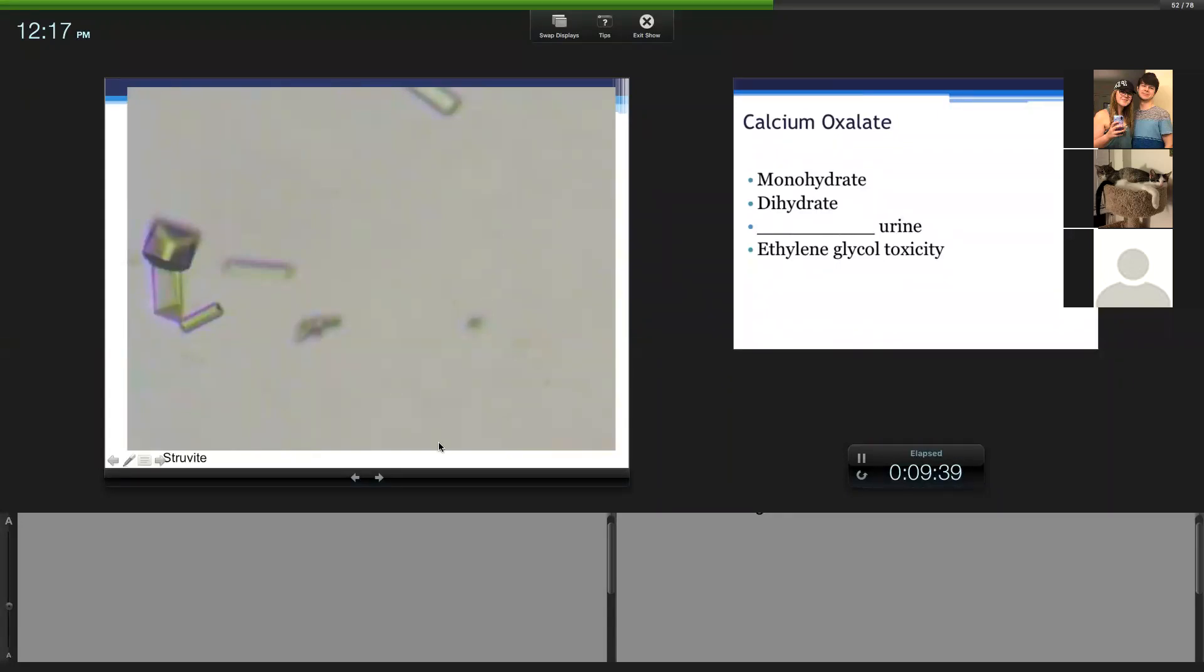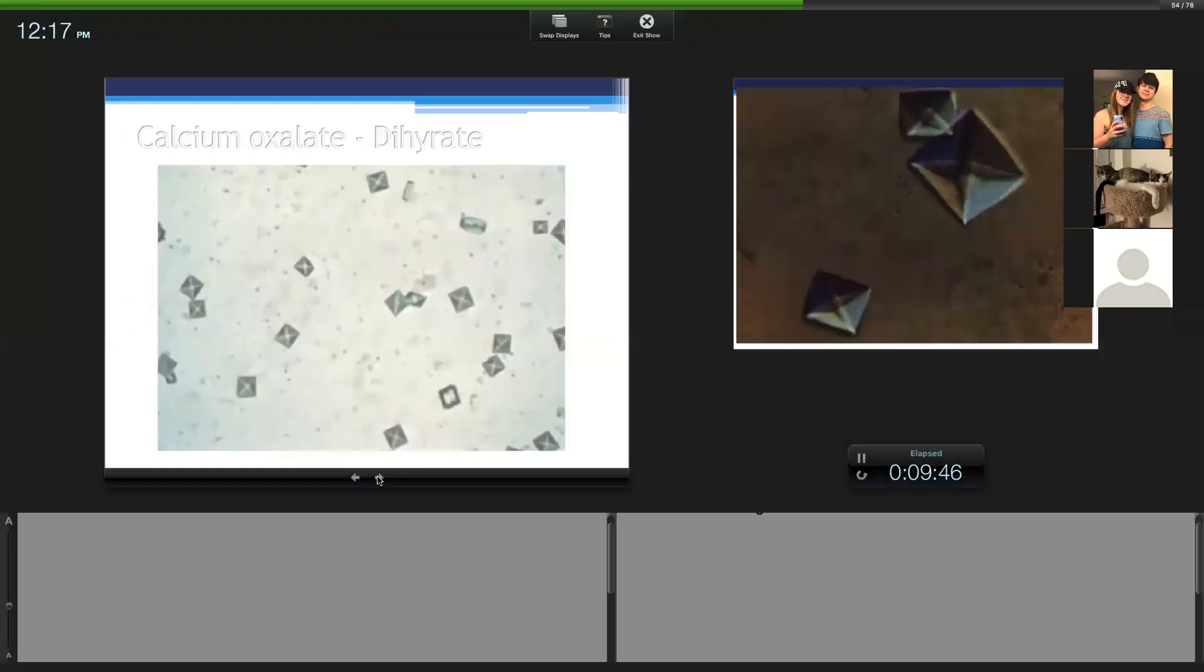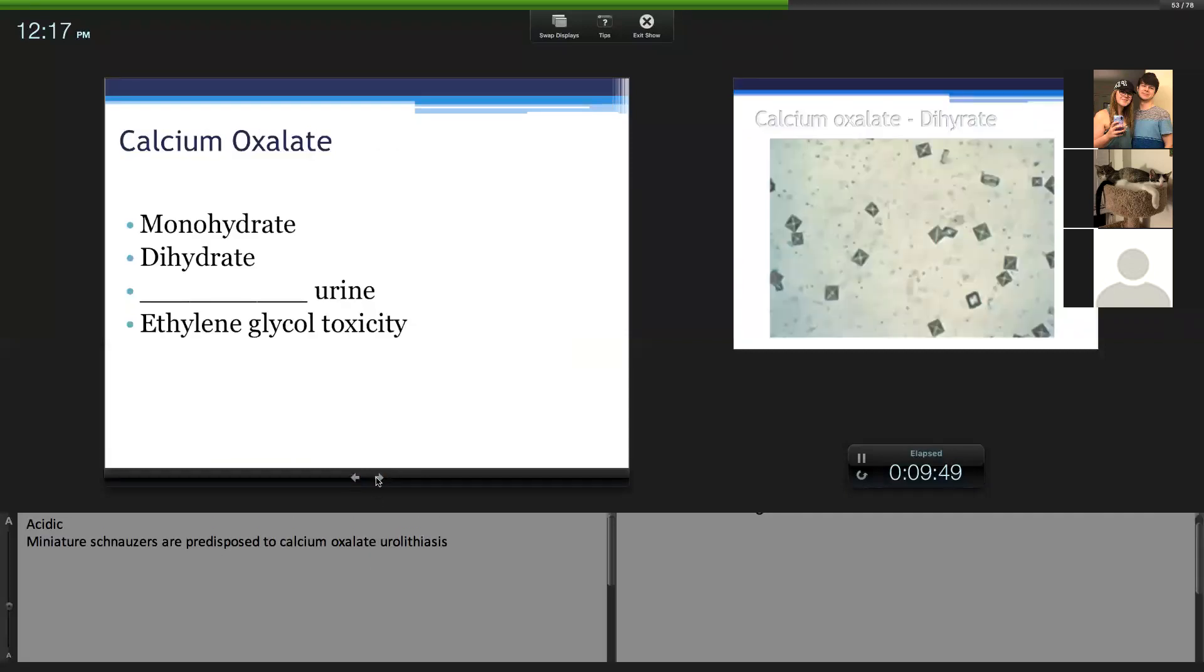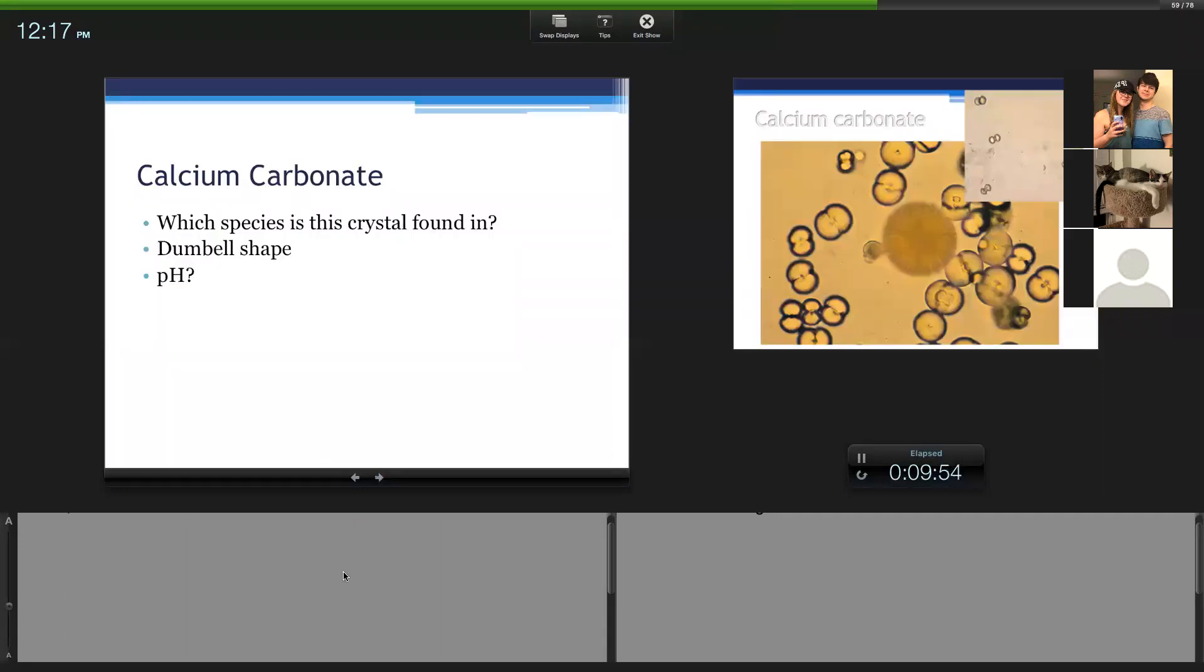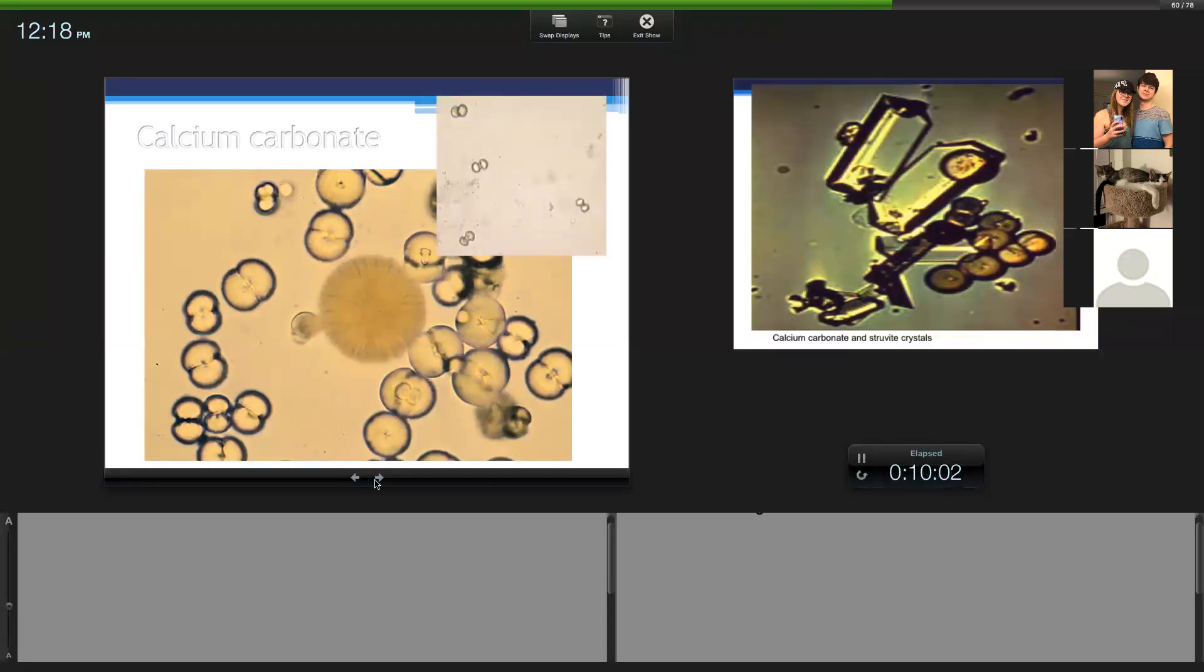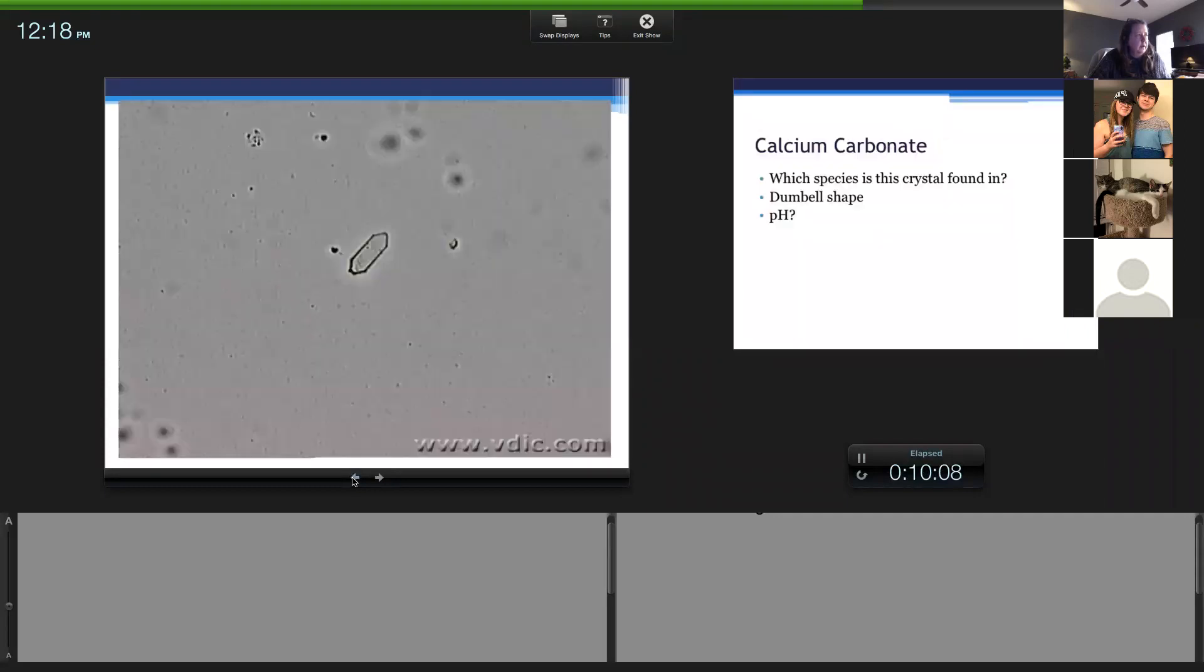Okay, so on 21, the presence of crystals is crystal urea. In horses and rabbits you tend to see calcium carbonate, which are the dumbbell shaped. If I tell you that they're found in horses and rabbits, do I expect them to be in alkaline urine or acidic urine?